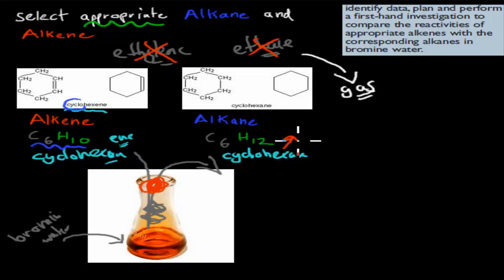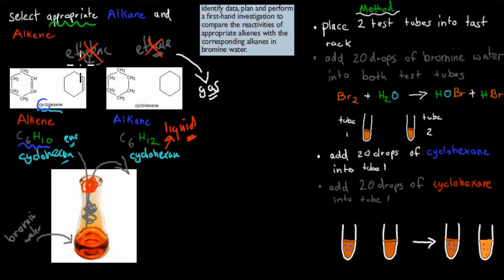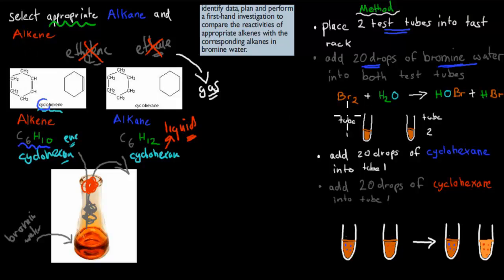They're appropriate because they're liquid at room temperature. The ring structure increases the boiling point, so the cyclic form is liquid rather than gaseous at room temperature, meaning we can mix it with bromine water. You should also know the chemical equation for bromine water: bromine molecules react with water to form HOBr and H⁺ — so you get an oxygen and hydrogen on one side, and a leftover hydrogen on the other.